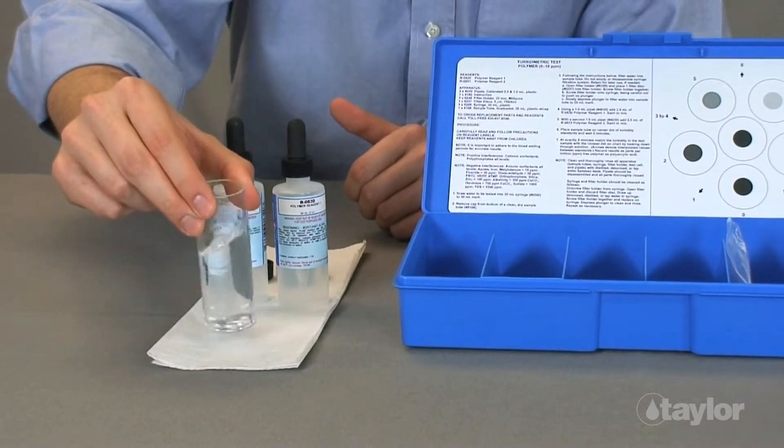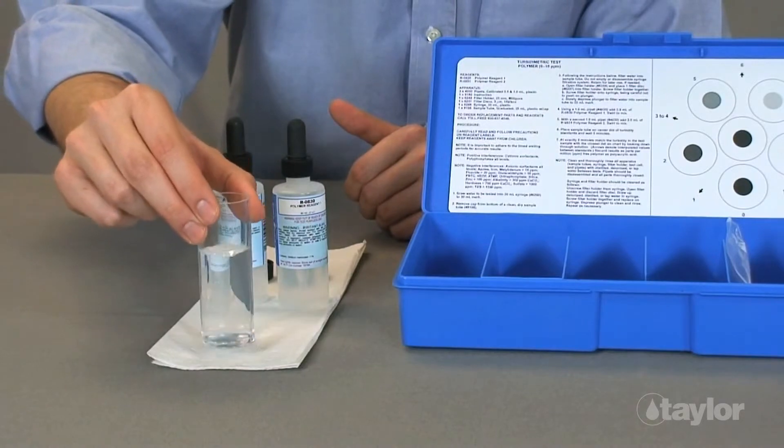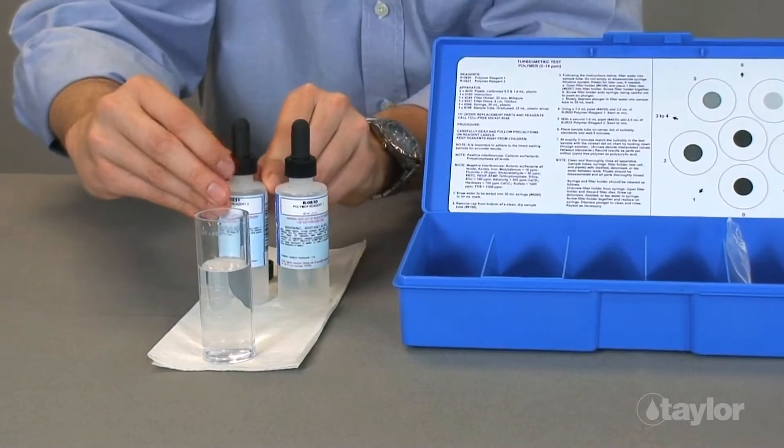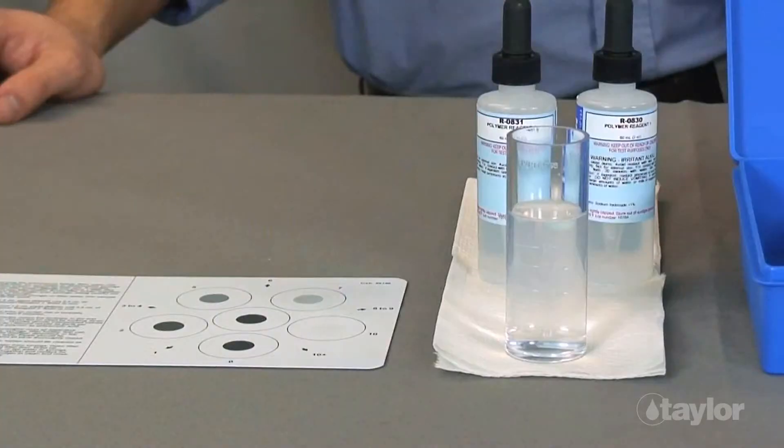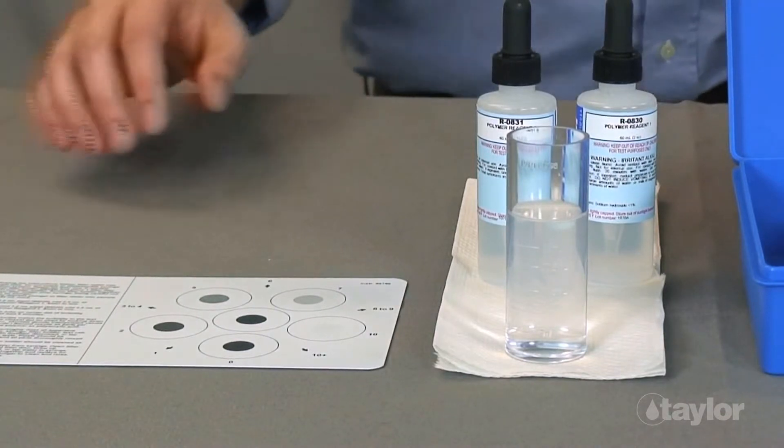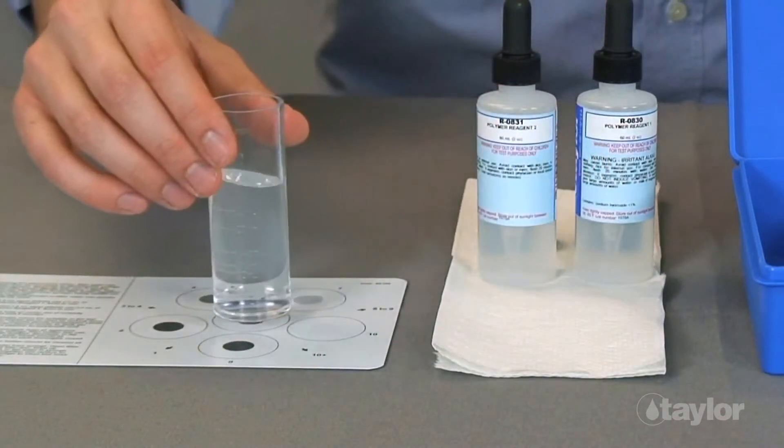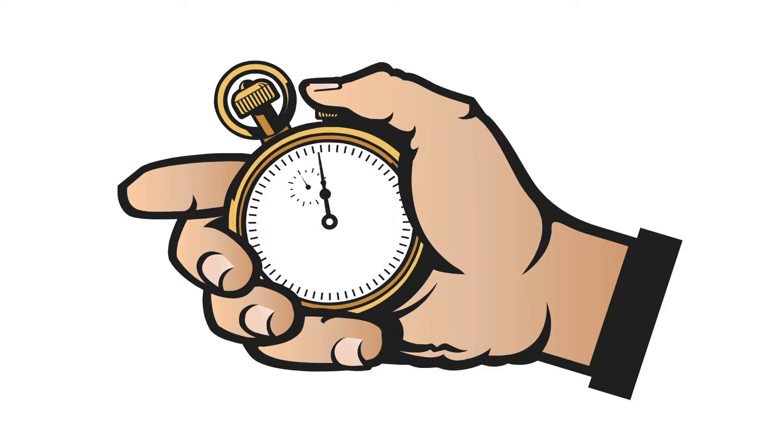Again, swirl to mix. Place the sample tube on the center dot of the turbidity standards provided in the kit. Wait 5 minutes by the clock.